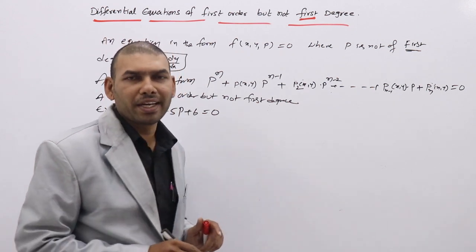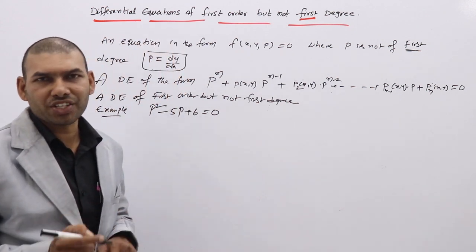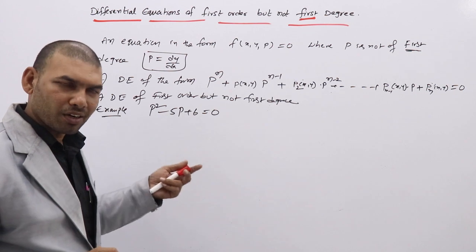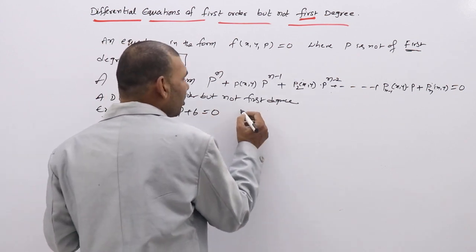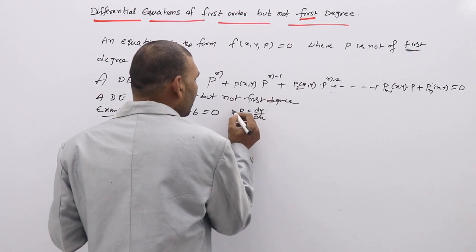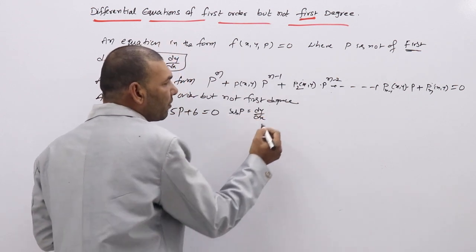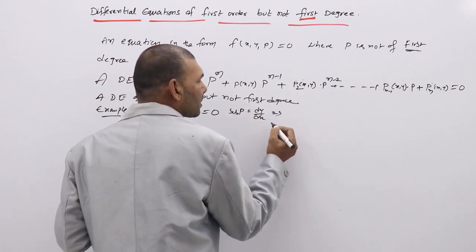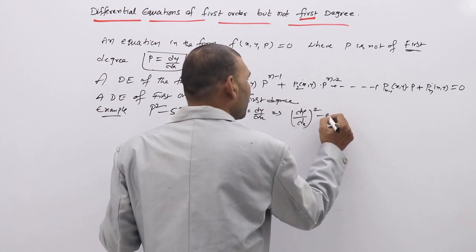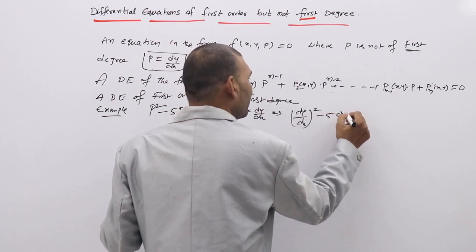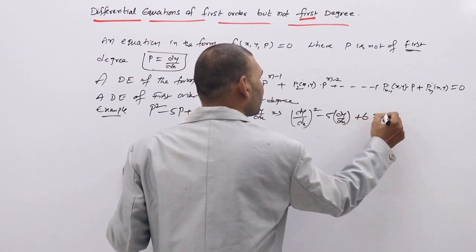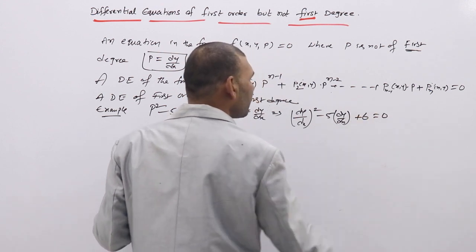If you replace p by dy/dx, so that you can understand which is a DE of first order but not first degree. Substituting dy/dx in place of p: (dy/dx)² - 5(dy/dx) + 6 = 0.